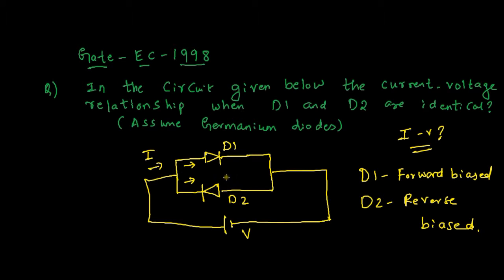If you observed my previous video on reverse saturation current, we know that a diode which is reverse biased doesn't conduct any current in the forward bias sense. However, in reverse bias, it will conduct a small current called the reverse saturation current.